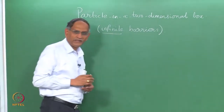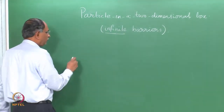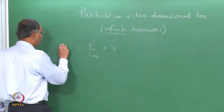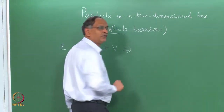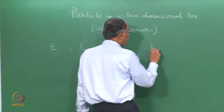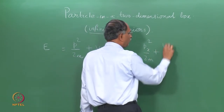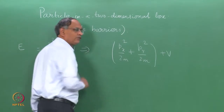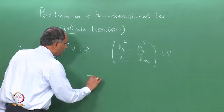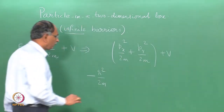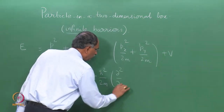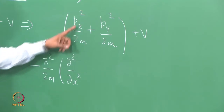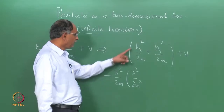The barriers are infinite. The energy term p²/2m is rewritten as px²/2m plus py²/2m plus V. In quantum mechanics, px is replaced by the operator −ℏ²/2m times the partial derivative, because the wave function is a function of two coordinates x and y, and the momentum in the x direction is given by the partial derivative.